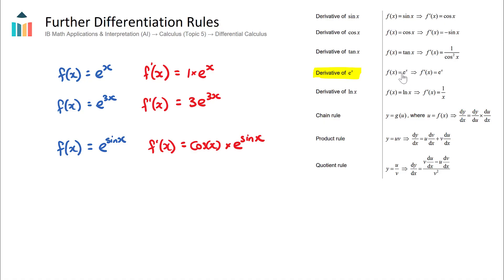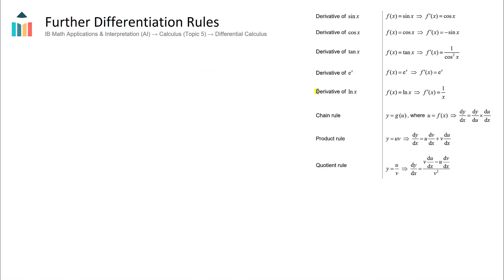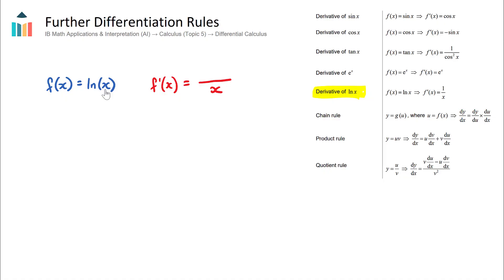Now let's look at the derivative of ln x, the natural log. If f(x) = ln(x), the rule is that whatever is inside the natural log bracket goes on the denominator, and the derivative of what's inside goes on the numerator. The derivative of x is 1, so we get 1 over x — which matches our formula booklet: the derivative of ln x equals 1/x.